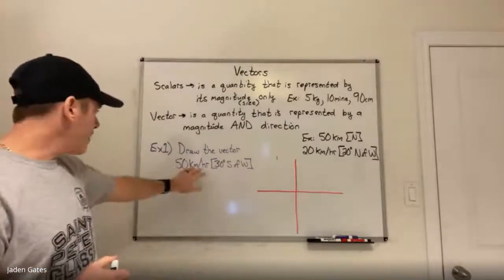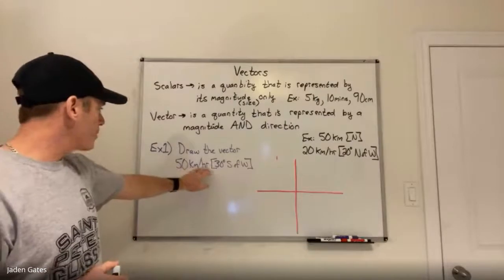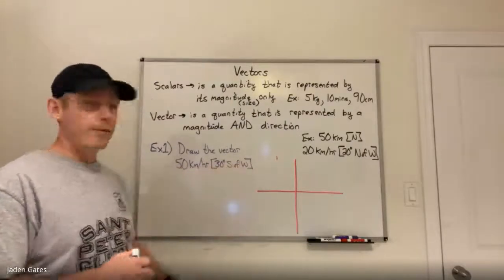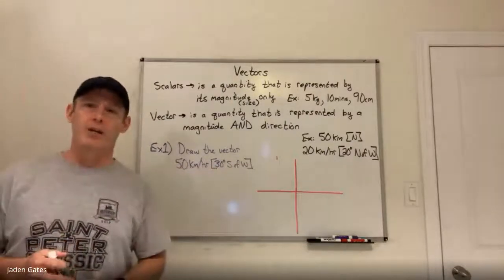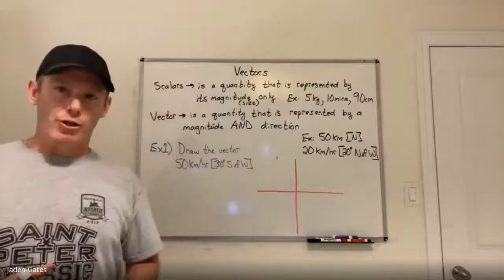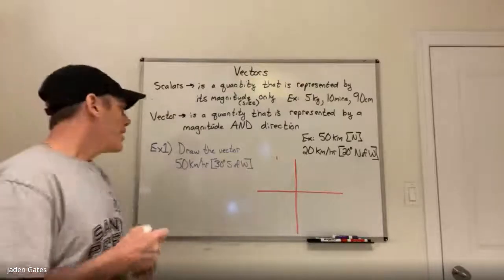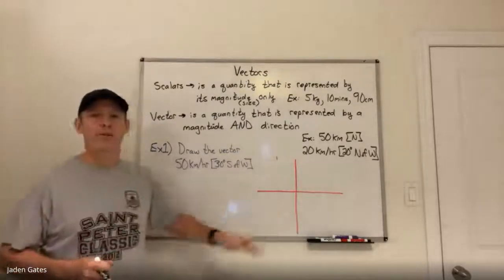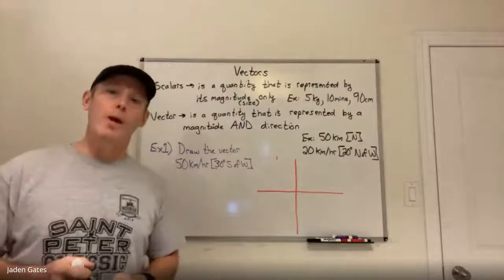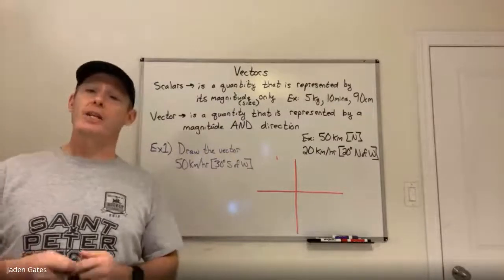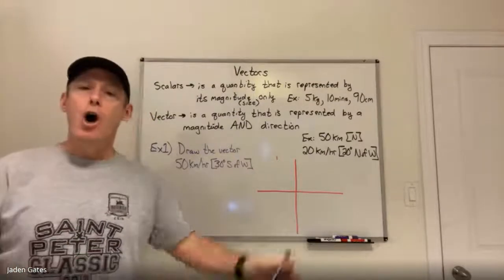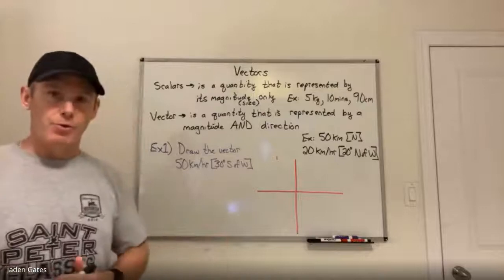I can still draw this vector, and we're going to need to draw it to find out information about the vector — to both represent a vector and to add or subtract vectors. Now, 50 kilometers an hour, 30 degrees south of west. The first thing you have to deal with with a vector is the direction. So what I have here in red is what's called a compass rose, and I'm going to represent northeast, south, and west on my compass rose.